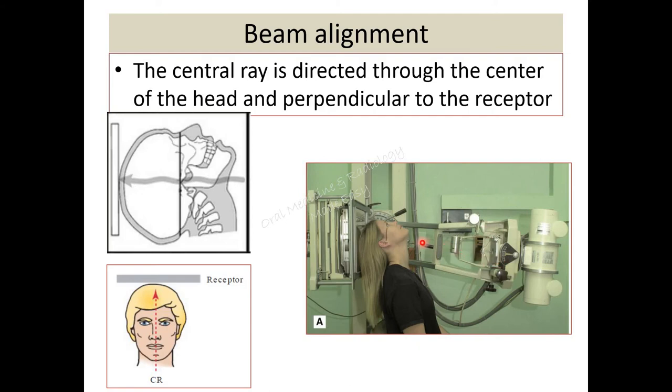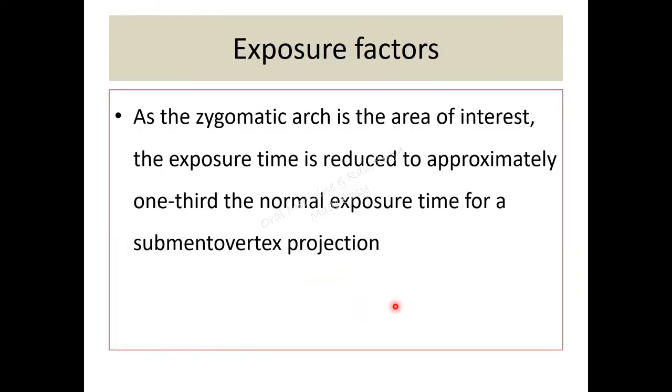The central ray is directed through the center of the head perpendicular to the receptor. The central ray should pass below the mentone and through the vertex of the skull, hence the name sub-mento vertex. In case of jug handle view, the zygomatic arch is the area of interest.